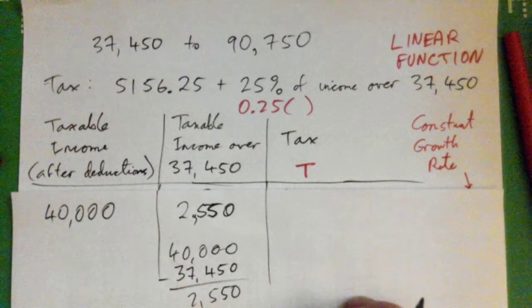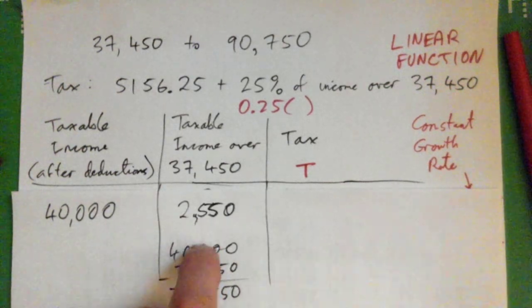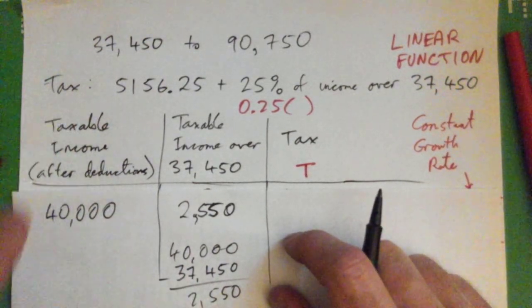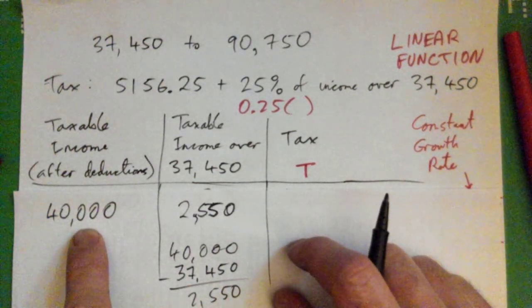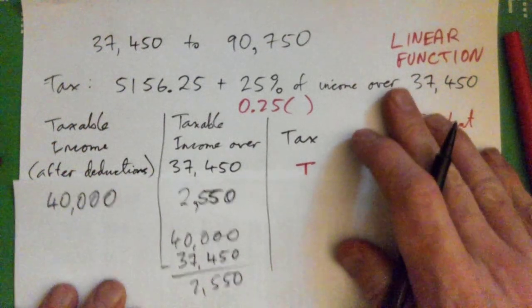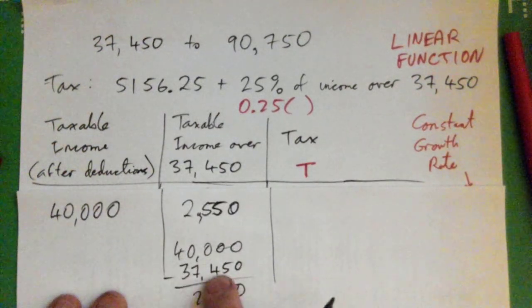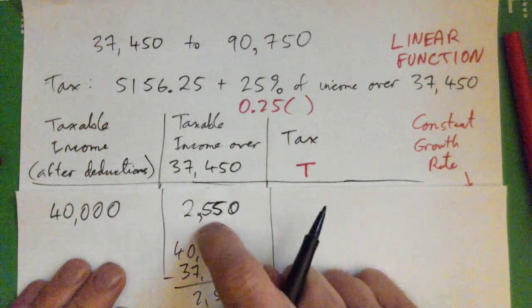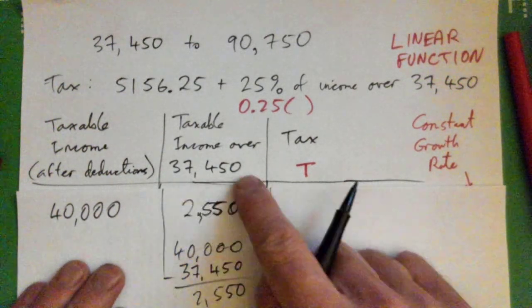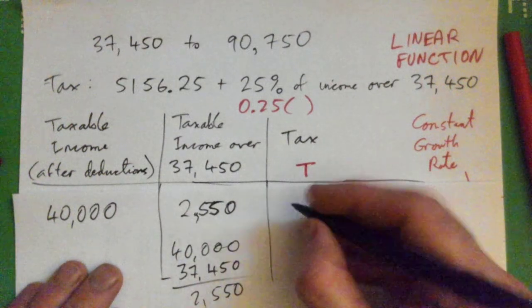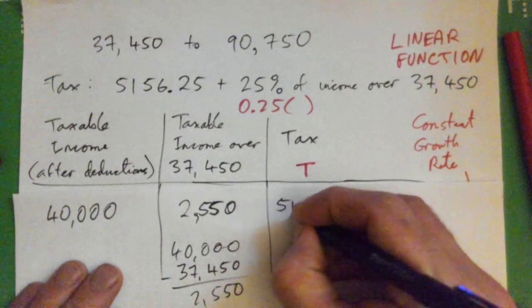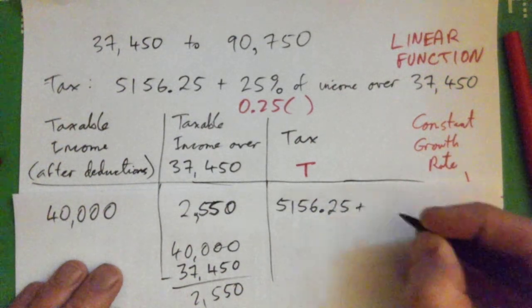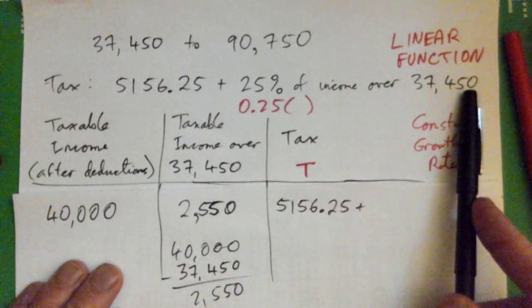So that was $40,000 subtract $37,450, and you will get $2,550. That's the amount over. So taxable income of $40,000, if I go $40,000 subtract $37,450, I get $2,550. That's the taxable income over $37,450. So the tax is then we pay $5,156.25 plus 25% of the income over that.